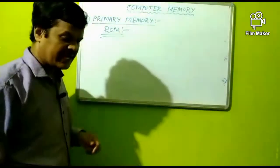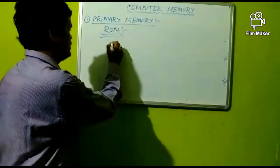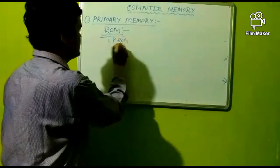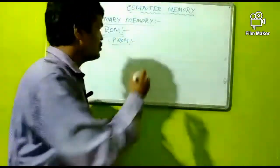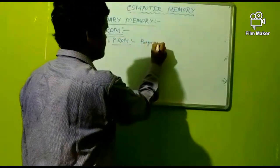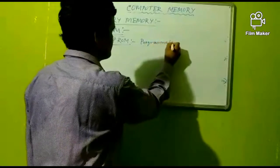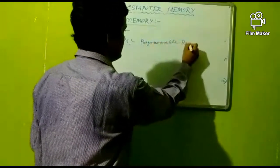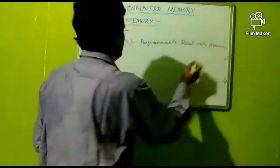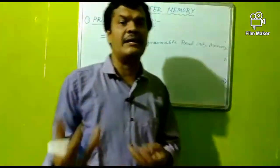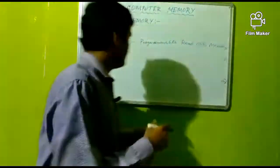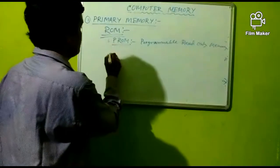ROM is of 3 types. Number one is PROM — Programmable Read Only Memory. That means we can only program data into the memory using PROM.